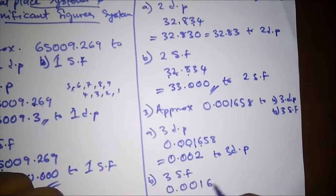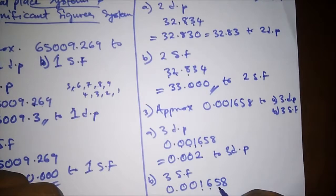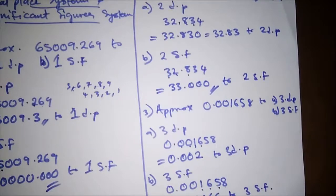For part (b), three significant figures: remember, in significant figures we start from the first non-zero value, which is 1. We count three digits: one, two, three — giving us 1, 6, and 5. The next digit is 8; since 8 is 5 or above, we round up. We add one to the 5, making it 6. Our answer to three significant figures is 0.00166.